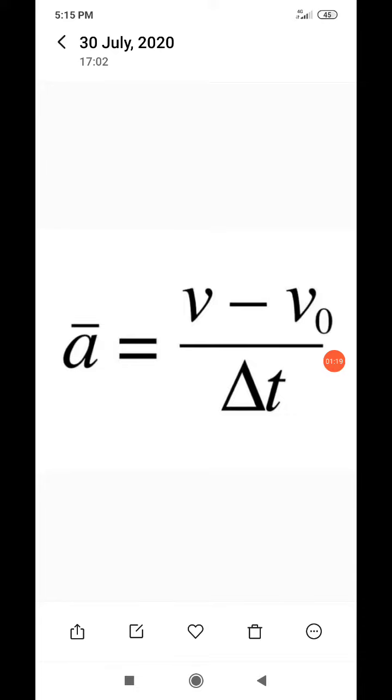Acceleration: ā = (v - v₀)/t or Δv/t, where ā equals average acceleration, v equals final velocity, v₀ equals initial velocity, and t equals time. Unit of acceleration is m/s² or meters per second squared.